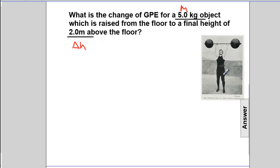Since this is on planet Earth, we know that gravity is 9.8 meters per second squared.